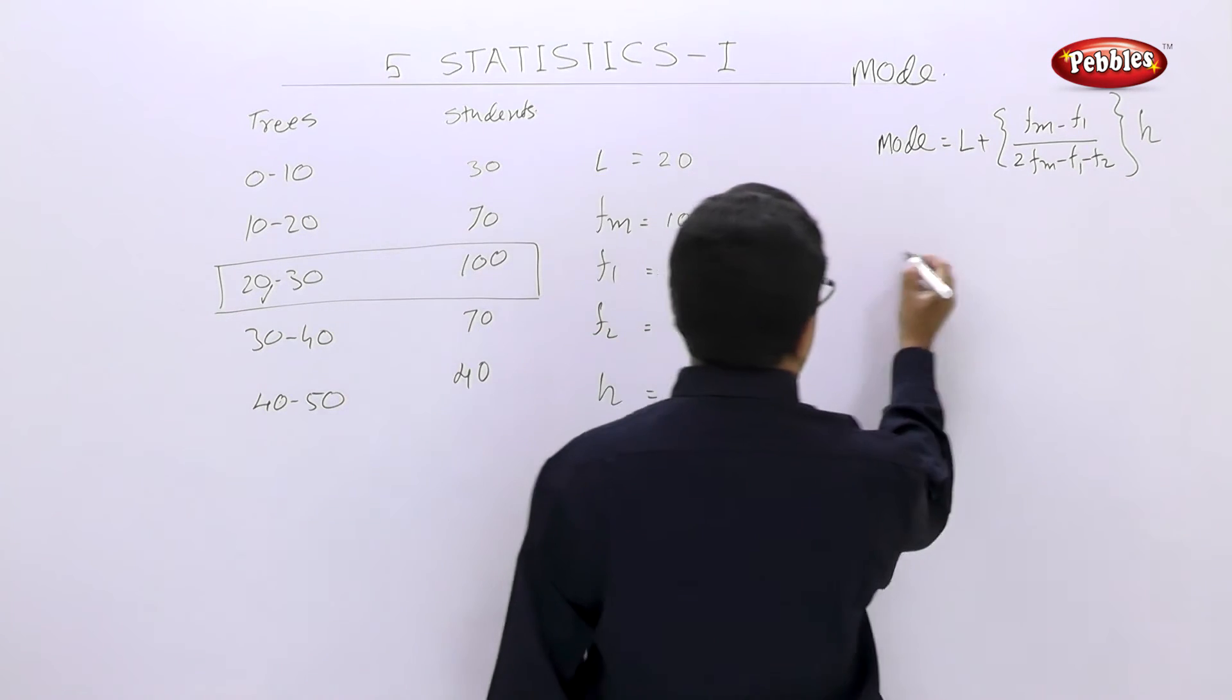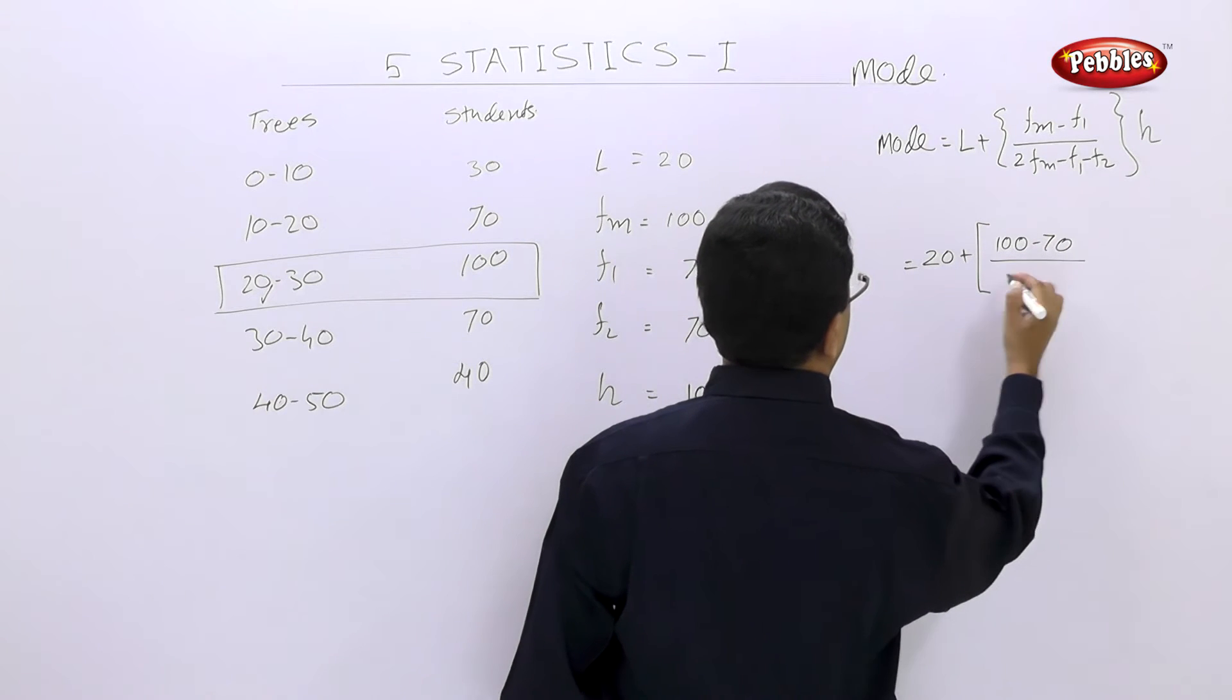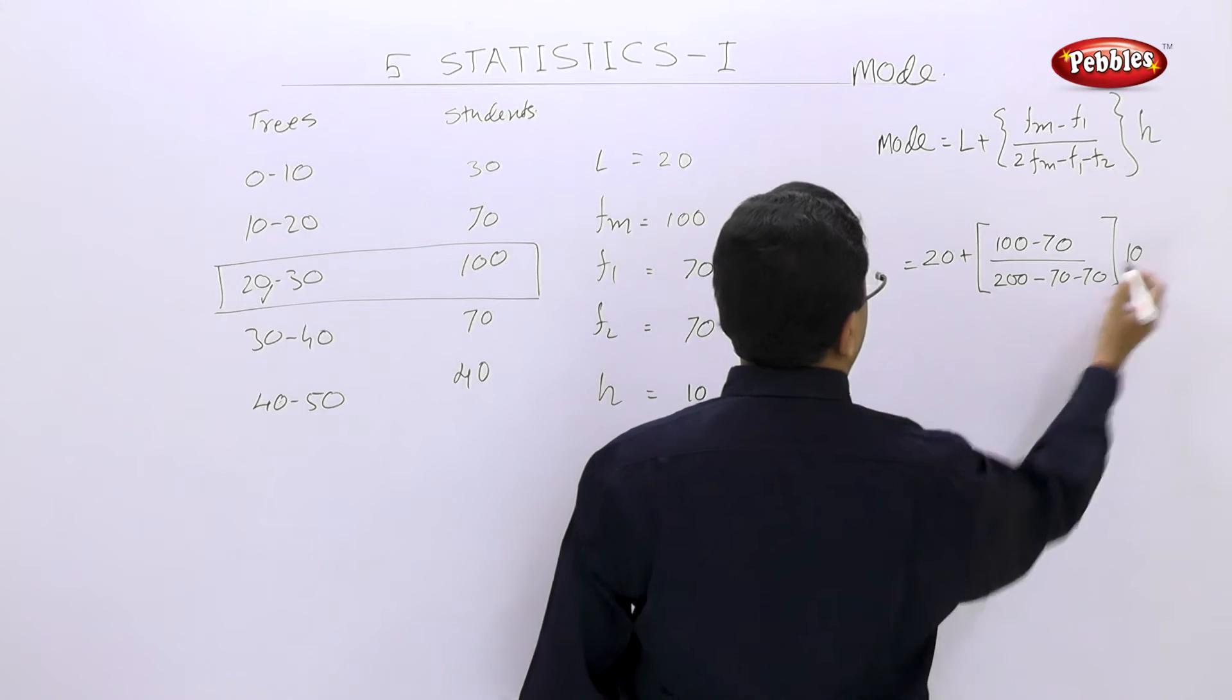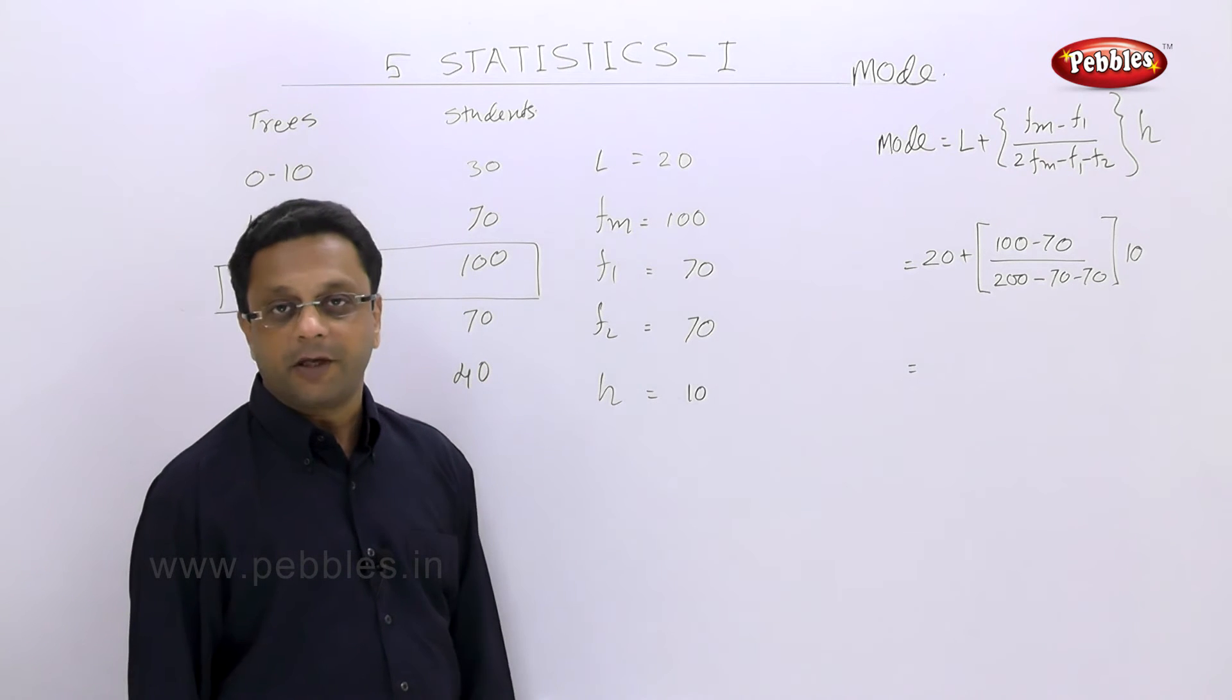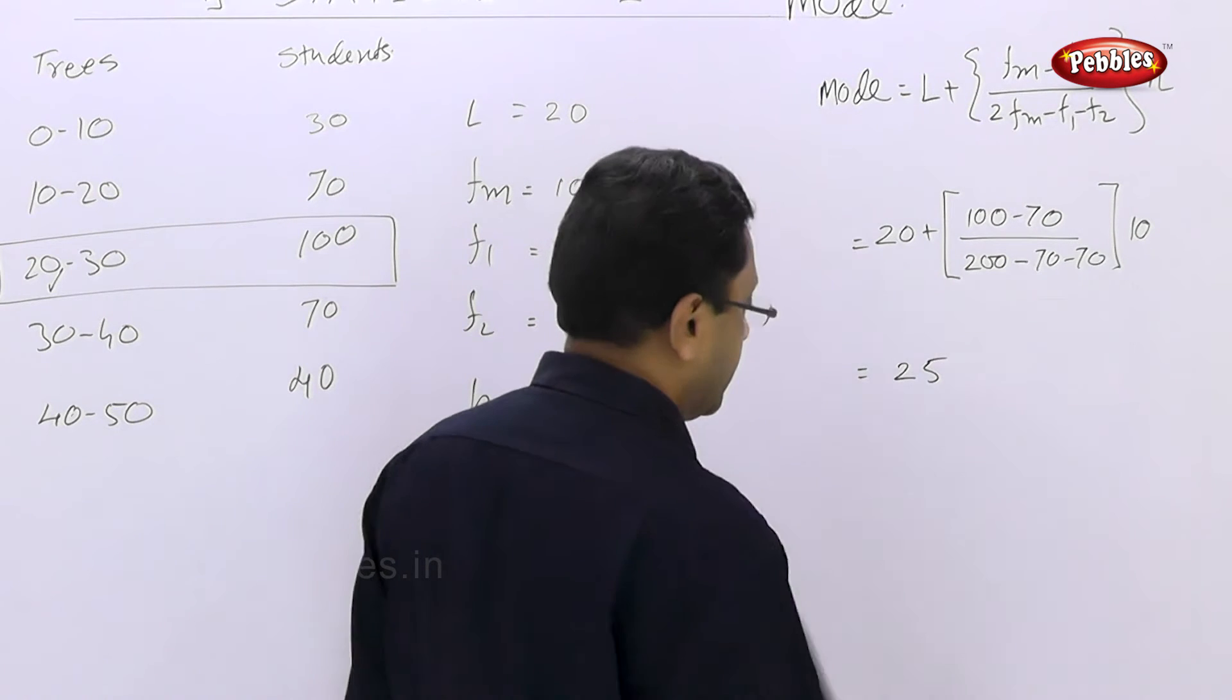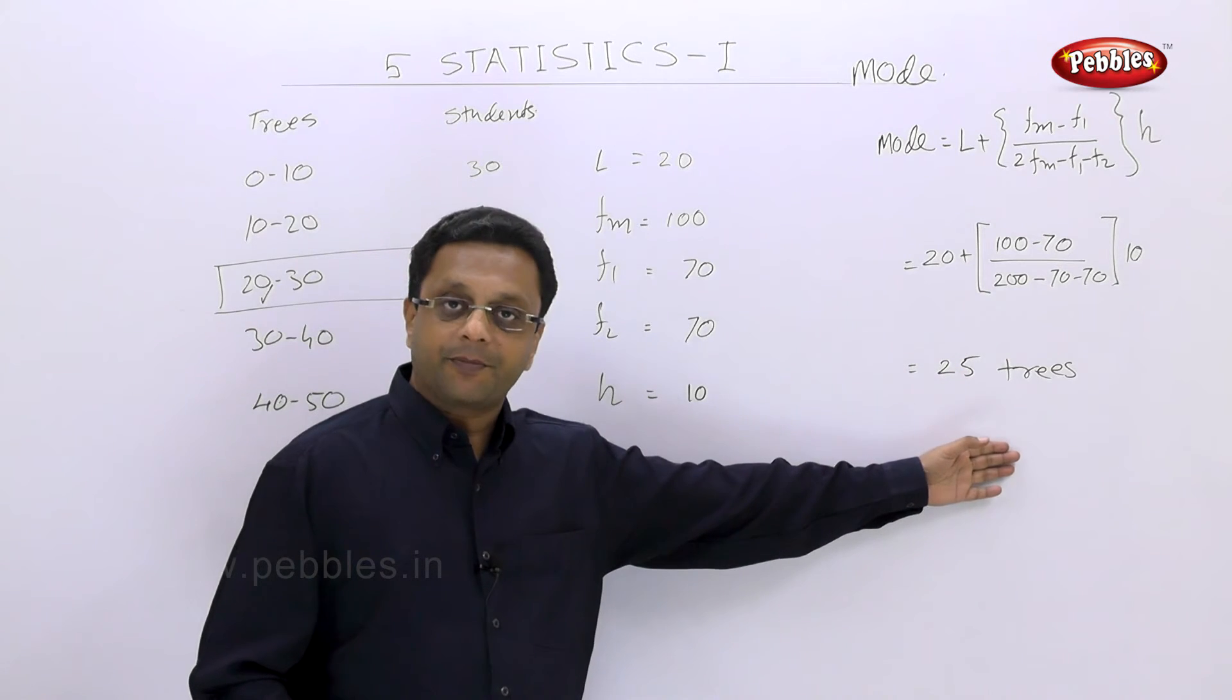Now you have to just substitute here. So the mode is equal to 20 plus 100 minus 70 upon 2 FM, means 200 minus 70 minus 70 multiply by 10. Very simple. Just now, arithmetics is remaining. Pause your video here and find out the answer quickly. Now the answer is 25 trees. So the modal number of trees planted are 25. Example over. Very simple.